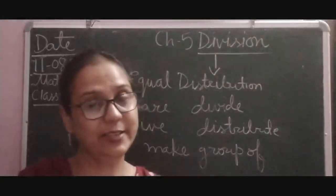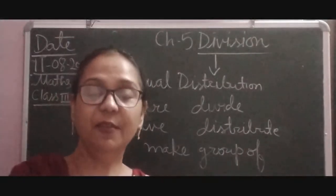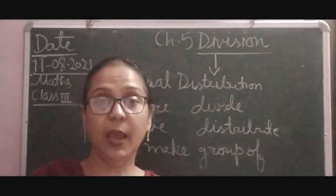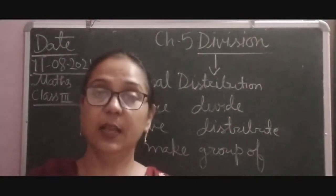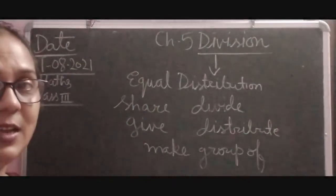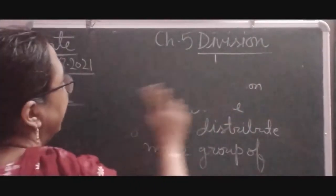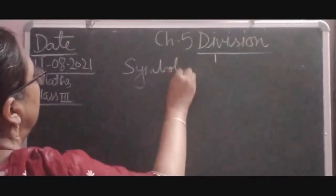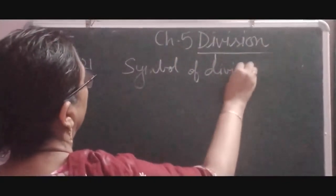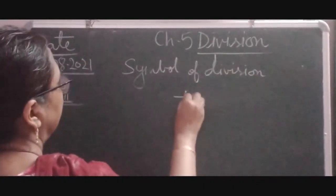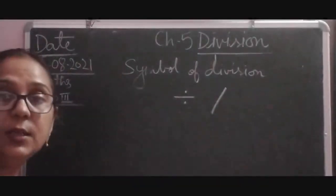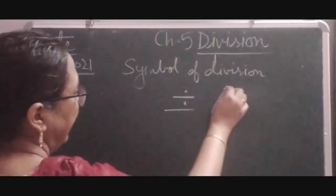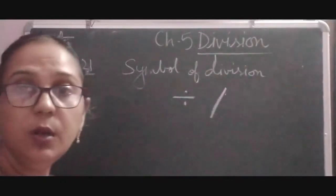Let's start division. We'll also learn what the numbers involved are called and what the answer is called. First, let me introduce the symbol of division. The symbol of division is ÷ — a line with two dots — or a slash (/). These are the symbols of division.